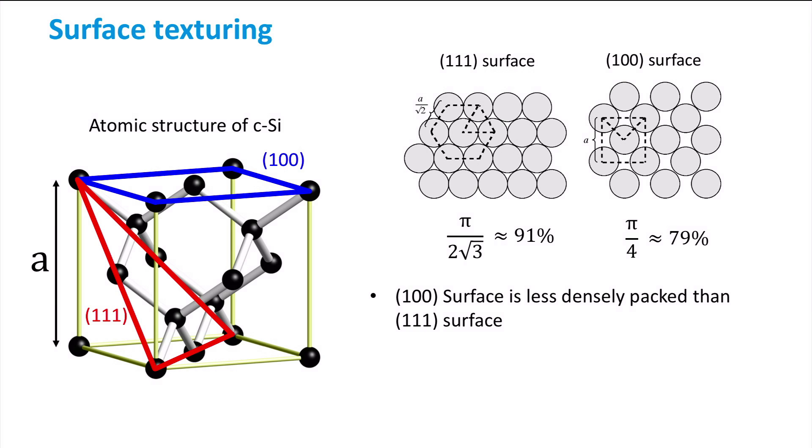If you are interested in how these packing densities are calculated, have a look at some literature on material studies of the face-centred cubic structure. Furthermore, each atom at a 1 1 1 surface is backbonded by 3 atoms, whereas for the 1 0 0 surface, each surface atom has 2 backbonded silicon atoms.